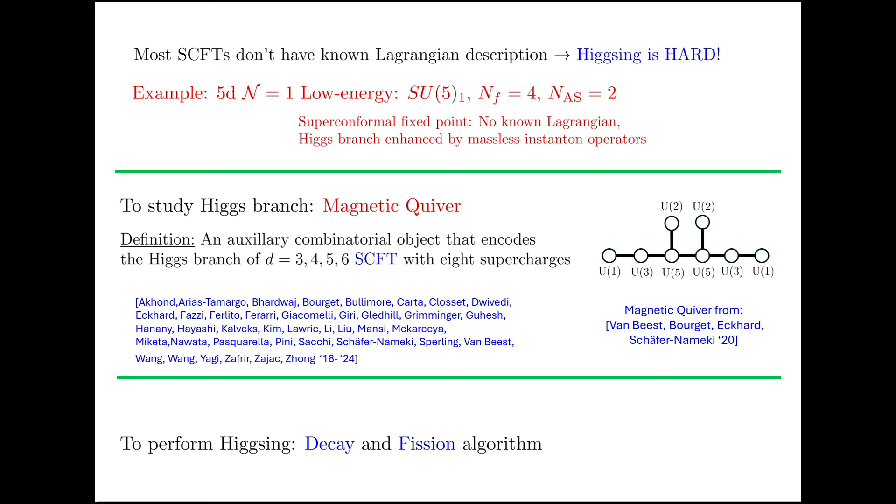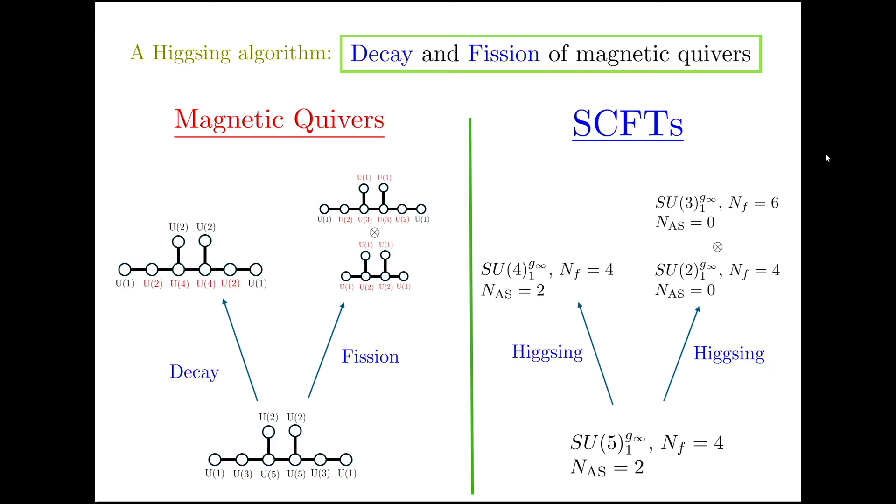To do so, I'm going to use something called the decay and fission algorithm. The magnetic quiver can either decay into a smaller magnetic quiver or fission into two magnetic quivers. Translating this back to the original 5D SCFT, it means I can either Higgs it to a smaller SCFT, by which I mean the low energy description has a smaller gauge group, or I can Higgs it into two decoupled SCFTs. These are the two fundamental processes.